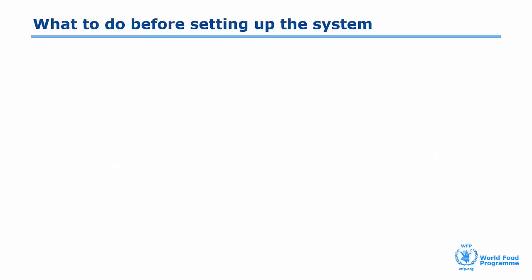Before setting up a two-way communication system, it's important that you first identify your target audience, such as the general population or beneficiaries. At the same time, you need to identify what information you'll be sharing. You might have some ideas already, but don't forget to test them. Talk with community members and understand what information they actually need. What is the most relevant information that you can provide?